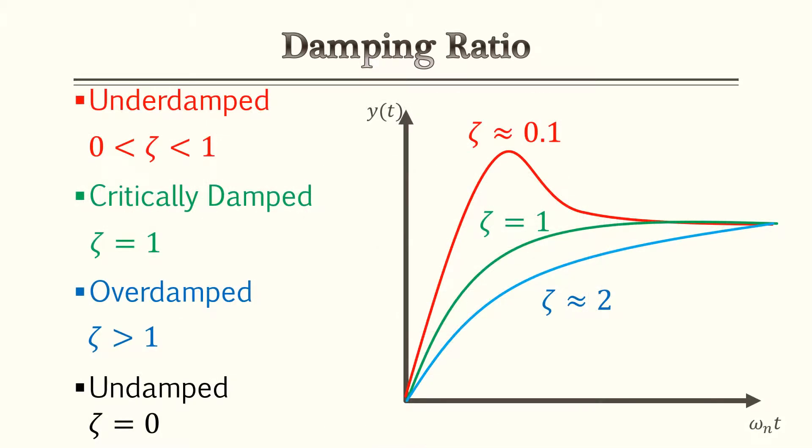Now that we've touched on what damping is using the pebble-in-a-pond analogy, let's understand damping ratio. Damping ratio has four different states: underdamped, critically damped, overdamped, and undamped. The three we're mostly going to focus on are underdamped, critically damped, and overdamped — shown in red, green, and blue respectively.